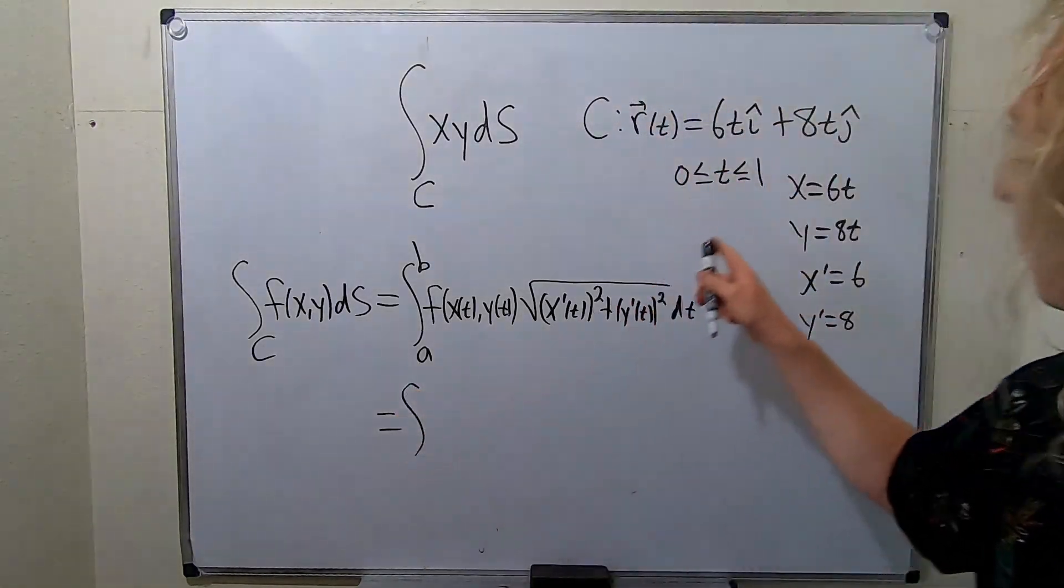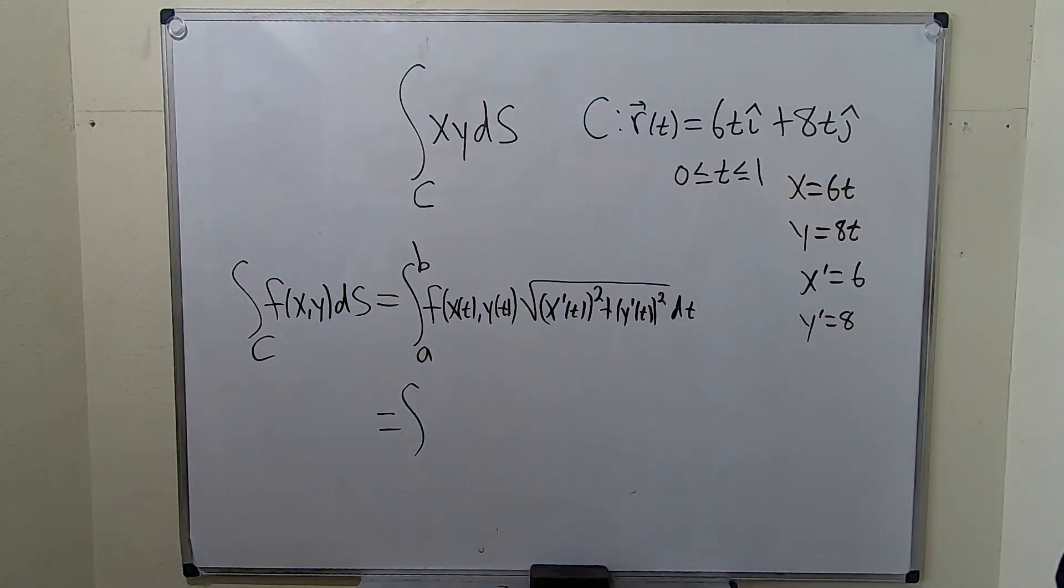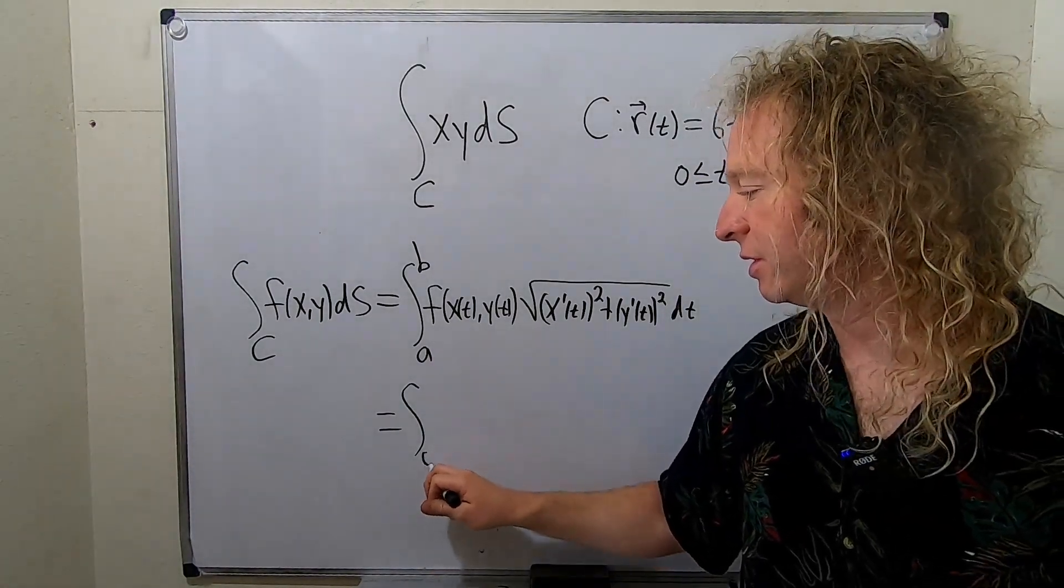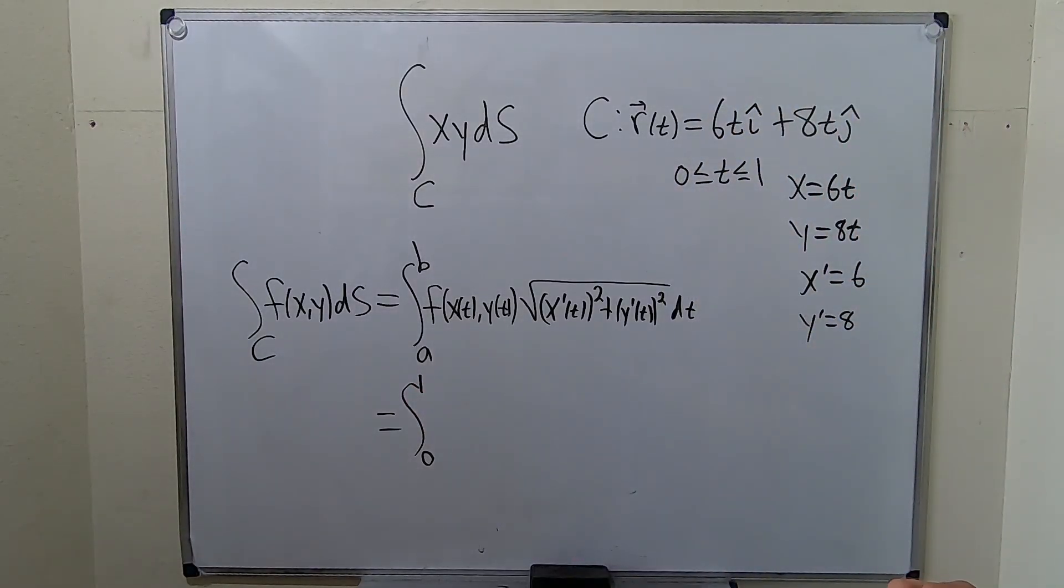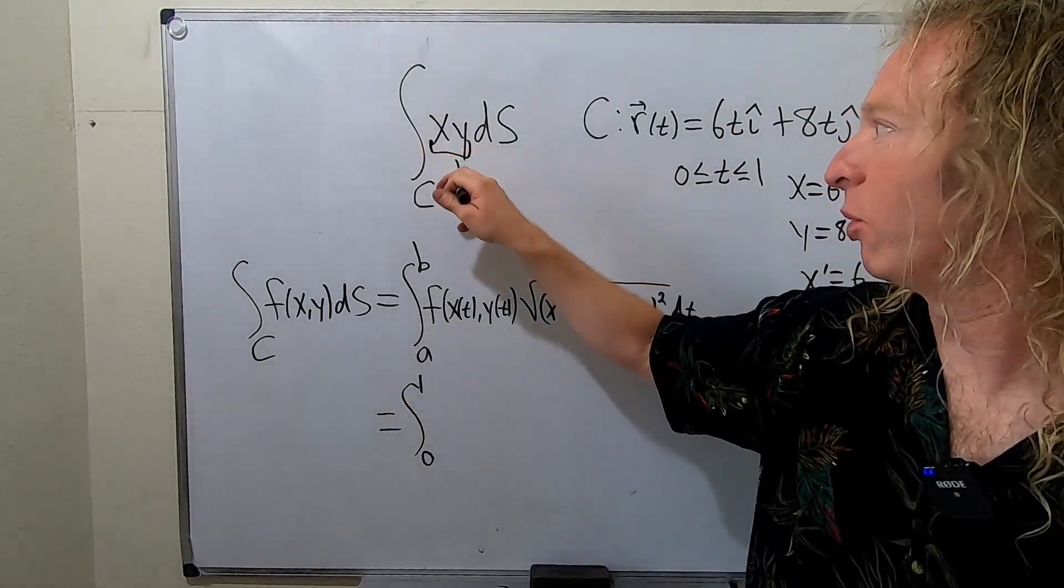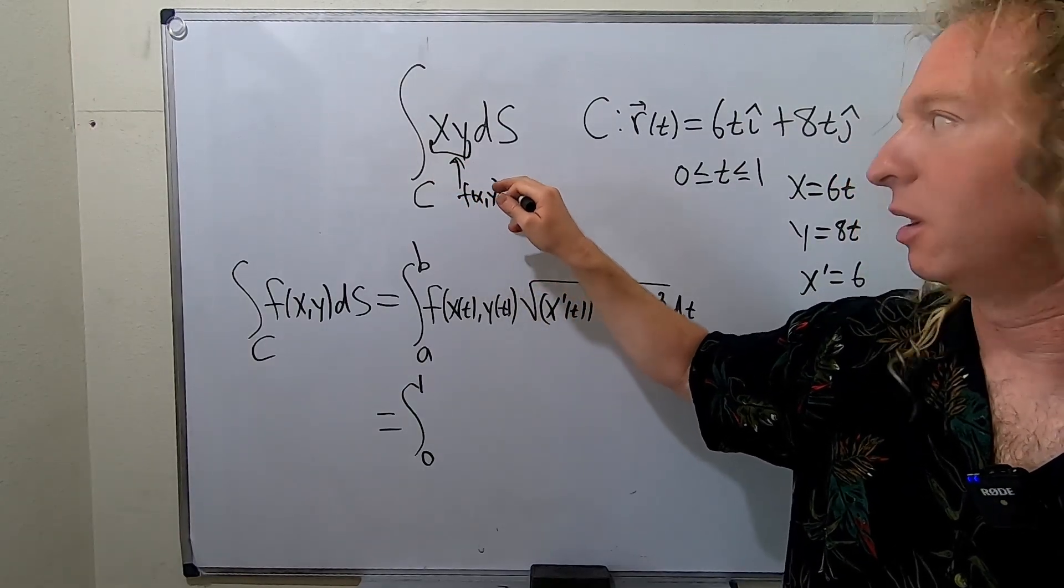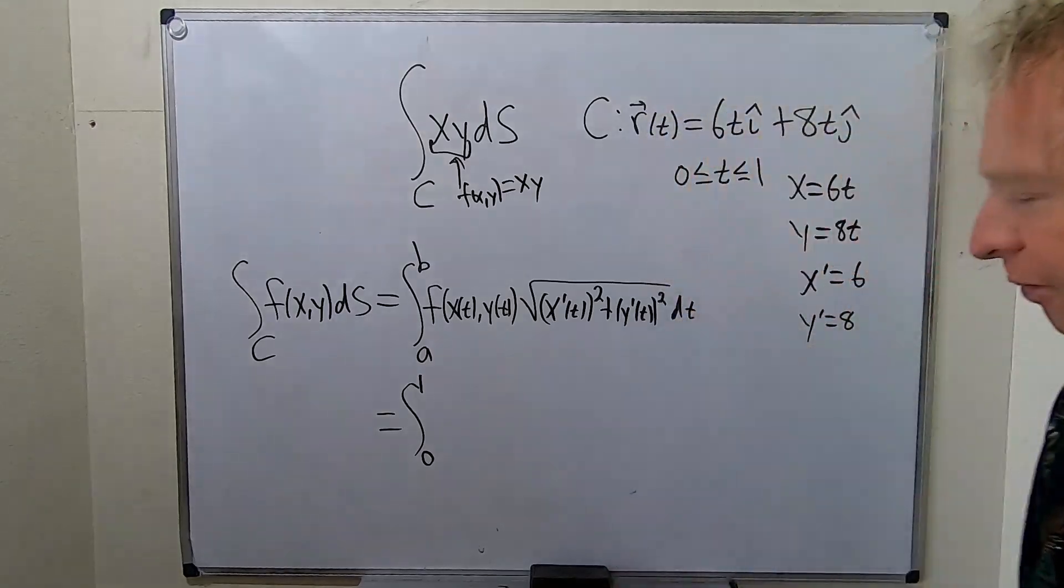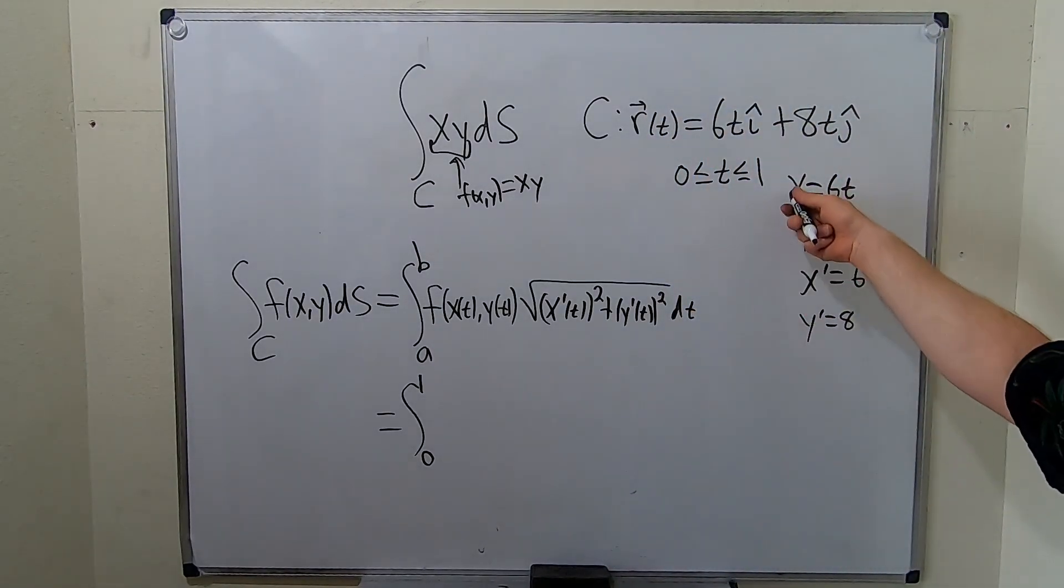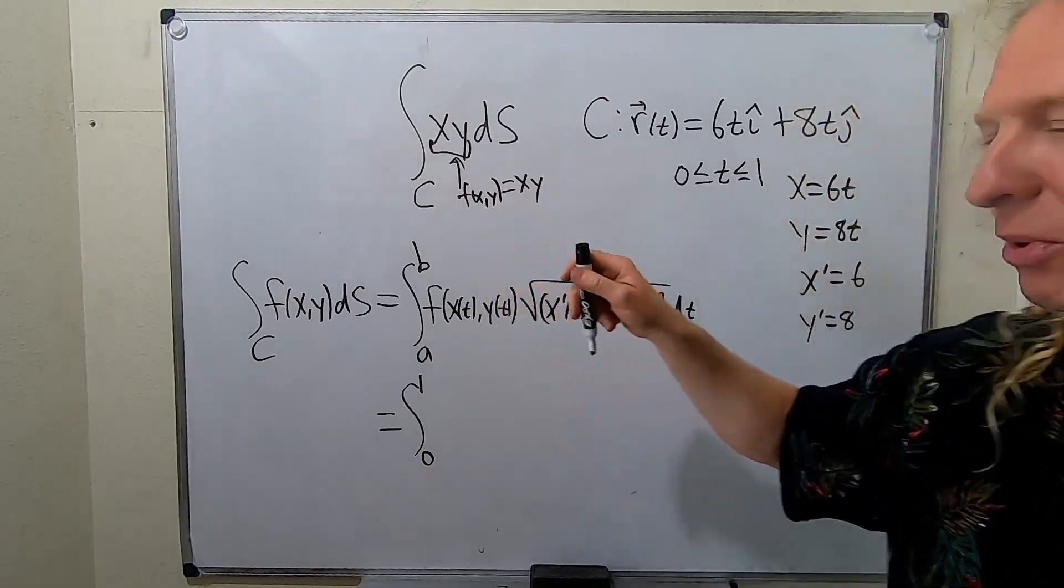So we're going from 0 to 1. That's your a and your b. So this is 0, and this is 1. And this is our f of x, y. Really important. This is our f of x, y. That's really key. So f of x, y is your x, y. So now we just take these, and we plug them in here. So this is where it gets a little bit weird.